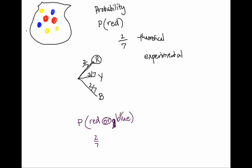When you see or, it typically means to add with probability. And then blue is two-sevenths, so you add two-sevenths and two-sevenths, and they have the same denominator, so it's really just two plus two all over seven. The number of total possible outcomes are seven, and the number of chances to get red is two, and the number of chances of blue are two, so two plus two is four, and you get four-sevenths as your answer.